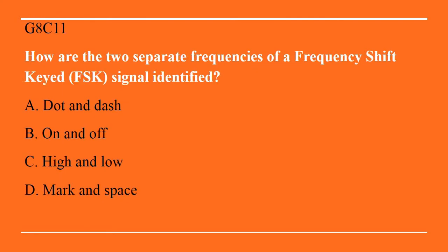G8C11: How are the two separate frequencies of a frequency shift keyed signal identified? A. A dot and a dash. B. An on and an off. C. High and low. Or D. Mark and space. The answer is D, mark and space.